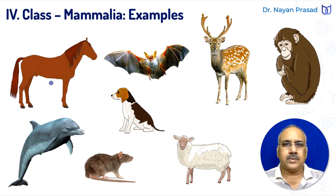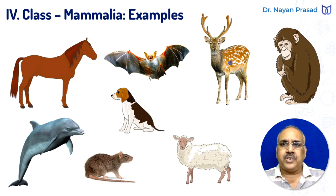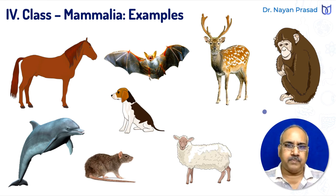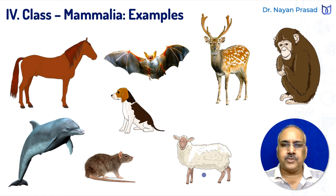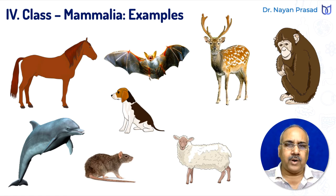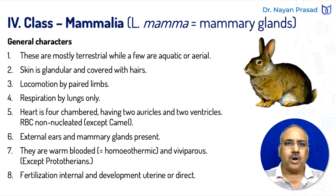One is the horse, terrestrial. Bat, flying. Deer, terrestrial, that has cursorial habit — fast running. Chimpanzee, arboreal or semi-arboreal. Dolphin, aquatic. Rat, fossorial, living in burrows. And this is the image of sheep. So several individuals are found on land, some in water, and some others are flying.